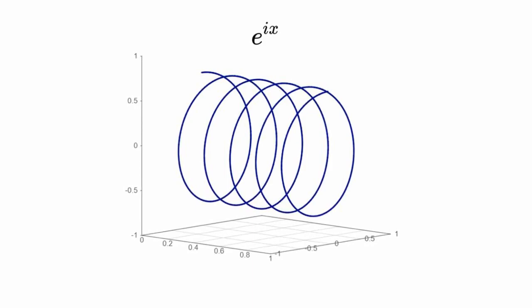Using the complex exponential, the Fourier transform transforms almost any signal from the time domain into the frequency domain. But what is a spiral doing in the Fourier transform equation? Well, just look at this.